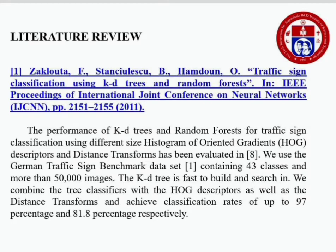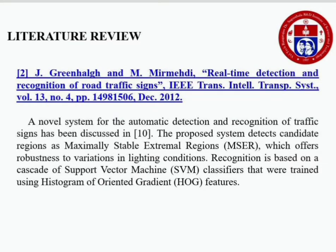Coming to the literature review: initially in 2011, Zaklauta, Stanslaskiew, and Hamden made traffic sign classification using KD trees and random forests. From them, we used the German Traffic Signs Benchmark dataset containing 43 classes and more than 50,000 images. They combined tree classifiers with HOG descriptors and achieved classification rates of up to 97% and 81.8% respectively. In 2012, GreenHulk and MirMedi made real-time detection and recognition of road traffic signs, where the proposed system detects candidate regions as maximally stable extremal regions.